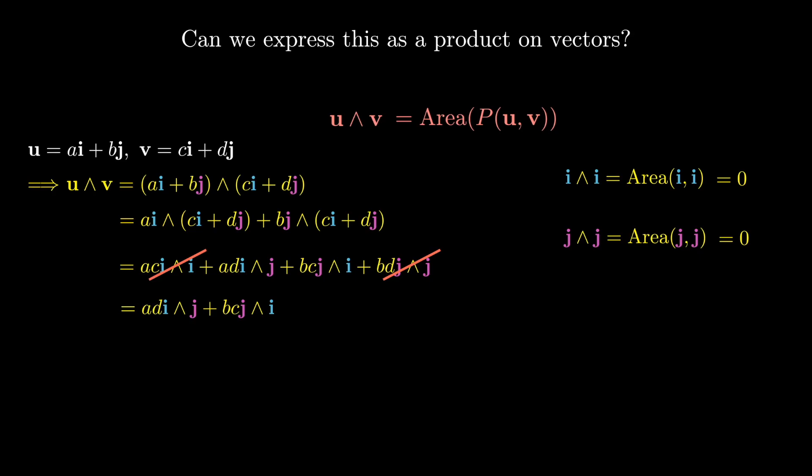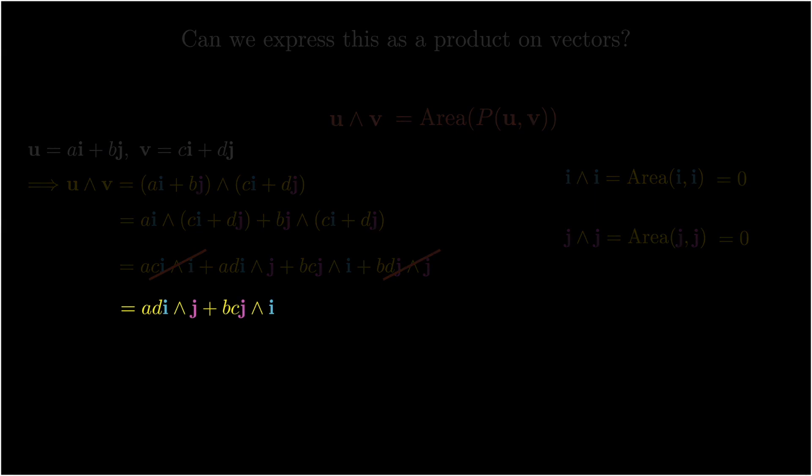And now we want to understand how does this wedge operation behave if we switch the order. So what is the difference between i∧j and j∧i? So we'll recall that i∧i and j∧j, well they're areas of lines, so they're going to be zero. And in particular I can consider the parallelogram formed with i+j and itself. Again that's just going to be the area of a line, so it will also be zero.